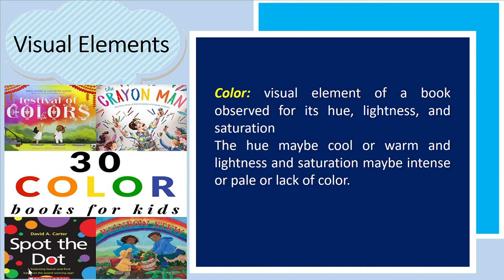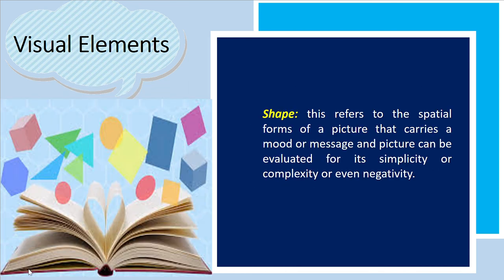Color as a visual element is observed for its hue, lightness, and saturation. The hue may be cool or warm, and lightness and saturation may be intense, pale, or lacking. Color catches attention or interest and may be a way to understand the mood or tone of the story. Shape refers to the spatial forms of a picture that carry a mood or message, and can be evaluated for its simplicity, complexity, or even negativity.